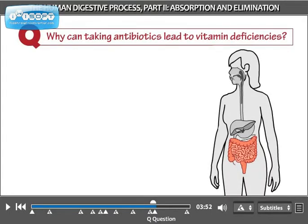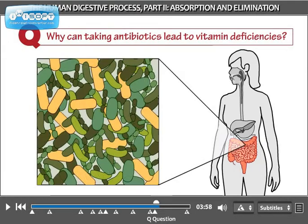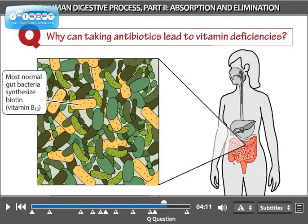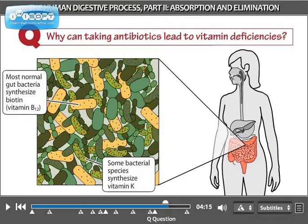Why can taking antibiotics lead to vitamin deficiencies? Our intestines generally contain trillions of bacterial cells, including as many as a thousand different species. Bacteria in the digestive tract provide important services — for instance, many bacteria produce biotin, which is a B vitamin, and a few produce vitamin K. These vitamins become available for absorption in the intestines and use in the cells of the body.